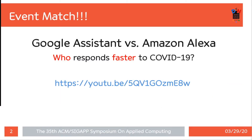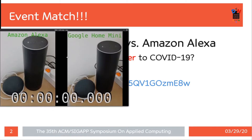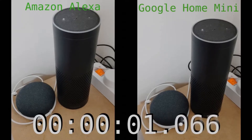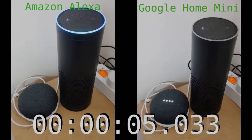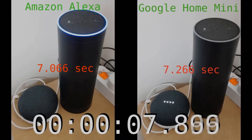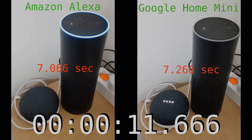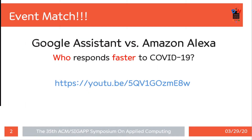Before we start, let's watch an event match. We are going to match Google Assistant with Alexa. The event is: who responds faster to the question 'What is COVID-19?' Since the presentation time is limited to 20 minutes, let's find the result from my video — we only need to look at the first 10 seconds. The winner is Amazon Alexa, who answered 0.2 seconds faster.